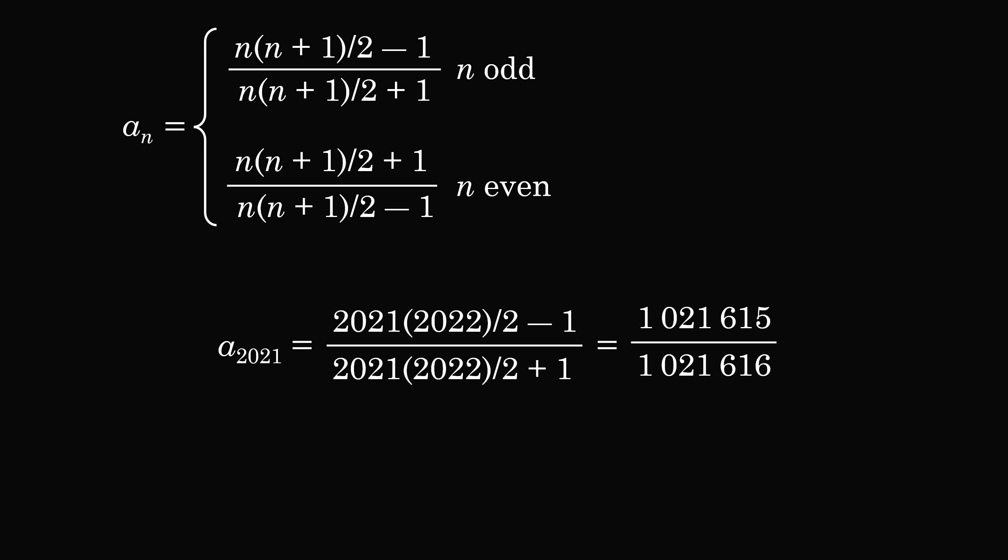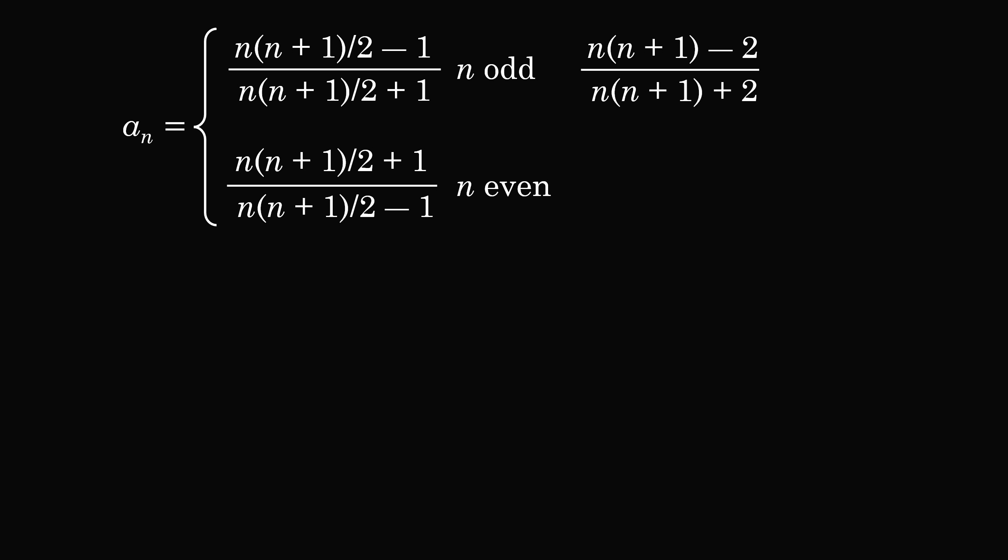Now to be 100% sure we have to prove this formula is true. In order to do that let's rewrite the fractions. We'll multiply the numerator and denominator by 2. So we have n multiplied by n plus 1 minus 2 divided by n multiplied by n plus 1 plus 2. The other fraction will be the reciprocal of this.